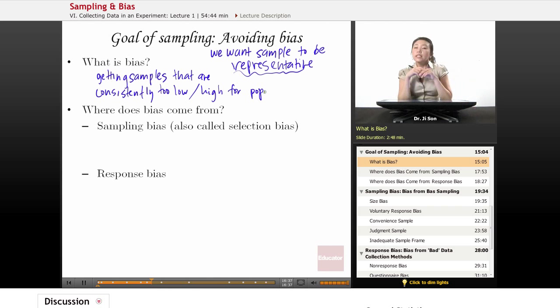Just because a sampling method results in a sample that's a little bit different from the population doesn't mean it's a bad sampling method. If it consistently gives you bad samples, that's a bad sampling method. That's bias.